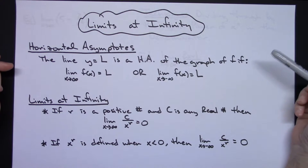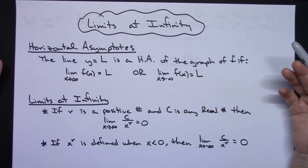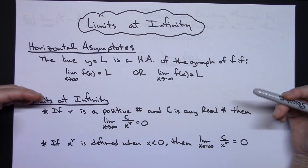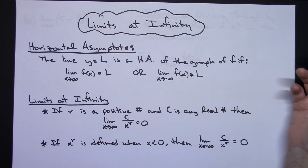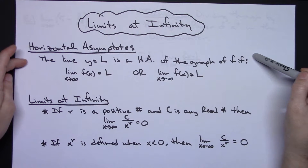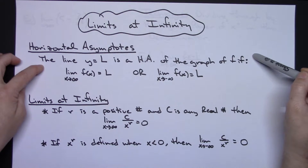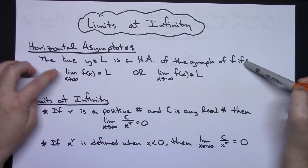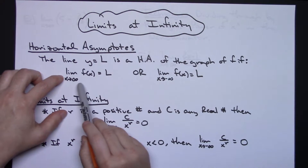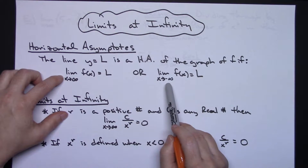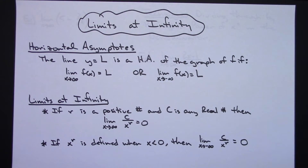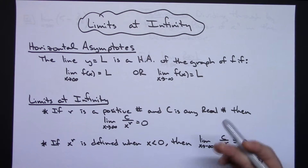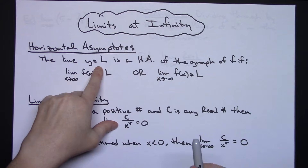For some background information you really do need to know the definition of a horizontal asymptote — not the one you learned in Algebra 2 or Precalc, but one that has its basis in calculus. As x approaches either infinity or negative infinity: the line y equals L is a horizontal asymptote of the graph of f if the limit as x approaches positive infinity of f(x) equals L, or the limit as x approaches negative infinity of f(x) equals L. So if those limits approach a number L, then we have a horizontal asymptote at y equals L.